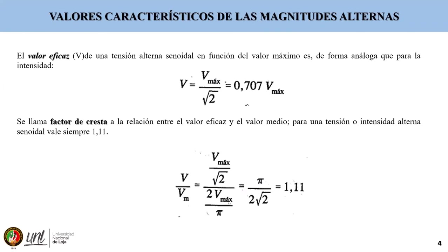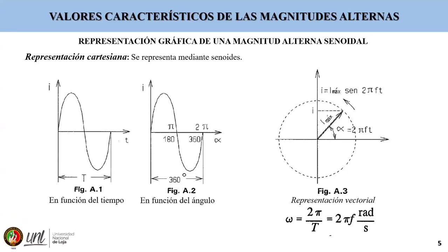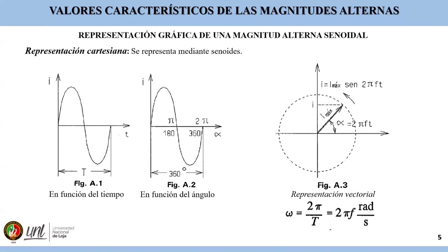También nos vamos a encontrar el factor de cresta, que es la relación entre el valor eficaz y el valor medio, o un valor que siempre está en 1,11 cuando nos refiramos a factor de cresta. La representación gráfica de una magnitud alterna senoidal puede hacerse mediante senoides en función del tiempo, en función del ángulo del recorrido de la onda, o mediante representación vectorial para definir una magnitud, sea voltaje o corriente.